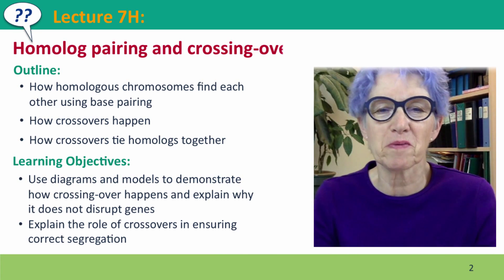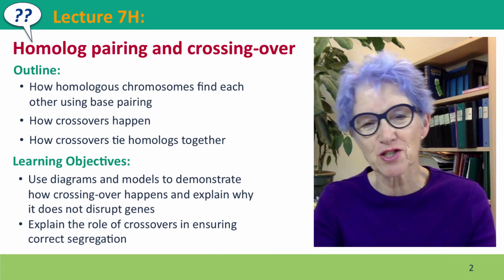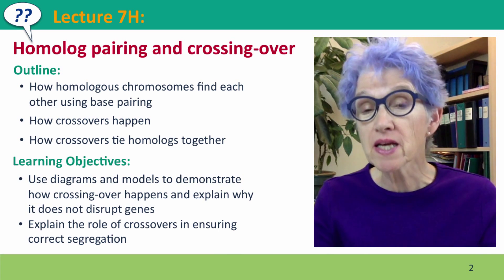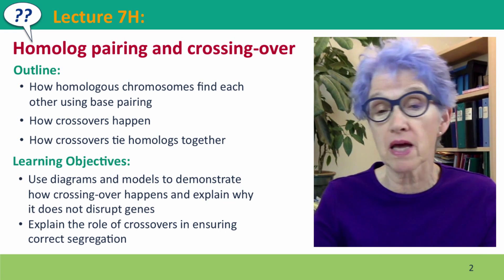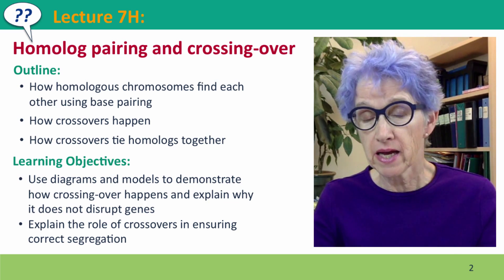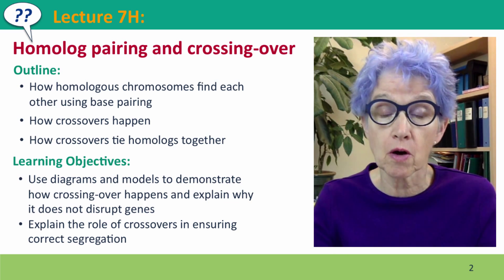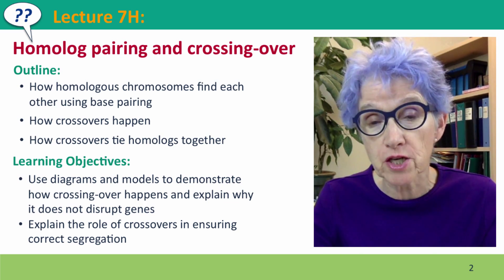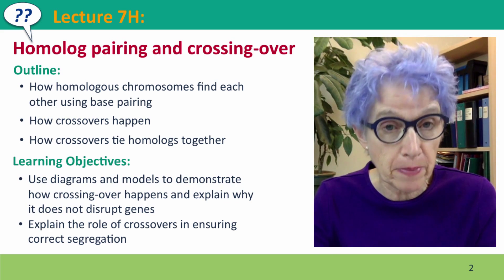Hi everyone, welcome back to Useful Genetics. This is lecture 7H, where we're finally going to get to the secret molecular side of meiosis and understand how the homologous chromosomes find each other and how crossing over happens.